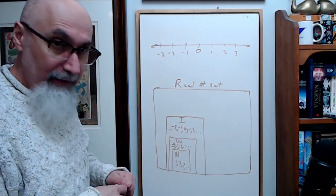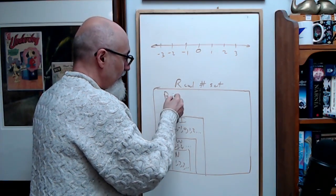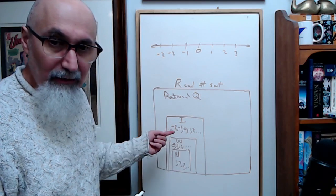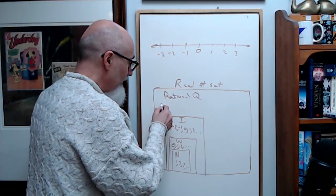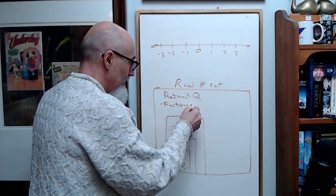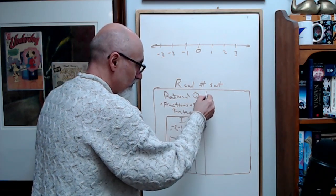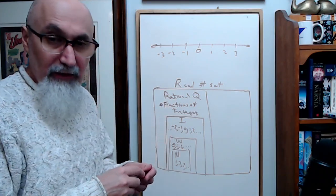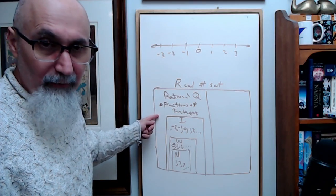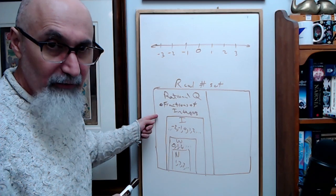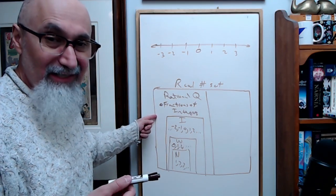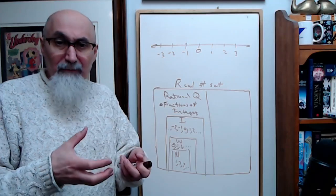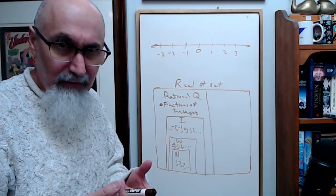Above integers, you have rational numbers — usually defined with Q. Rational numbers are any numbers you can write as fractions of integers. In the US, students are often told these are numbers whose decimals either end or repeat, but I don't like that definition. The definition should be: numbers you can write as fractions of integers — that gives students a better grasp.